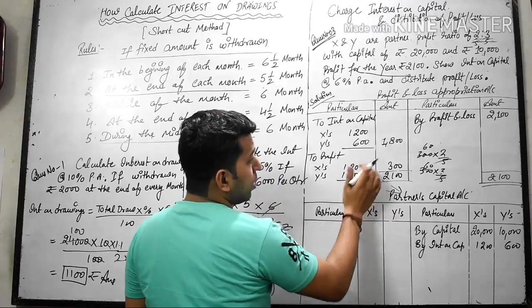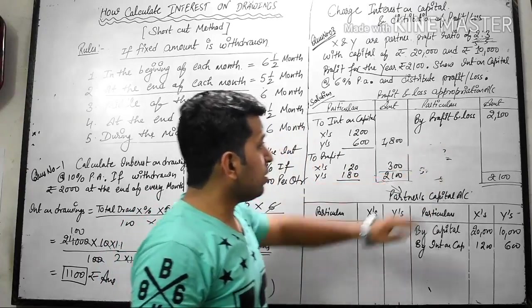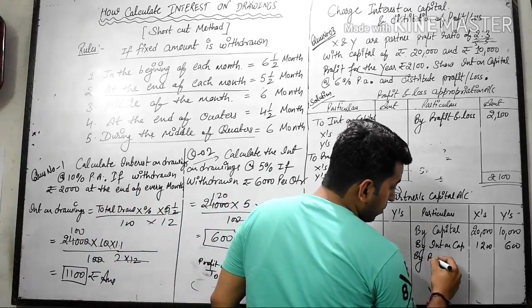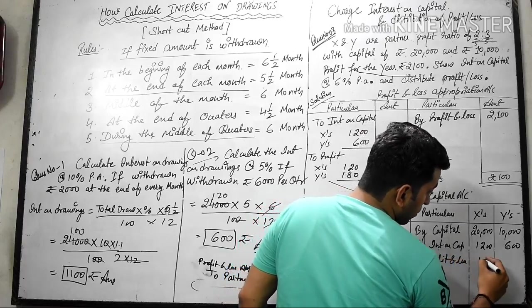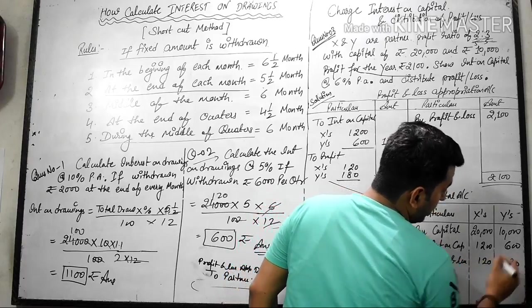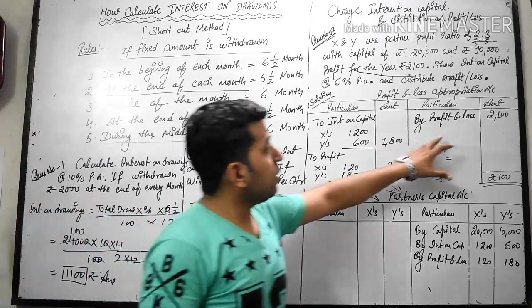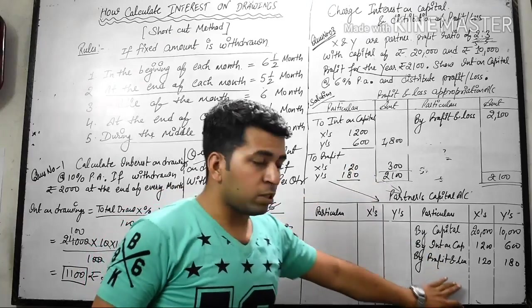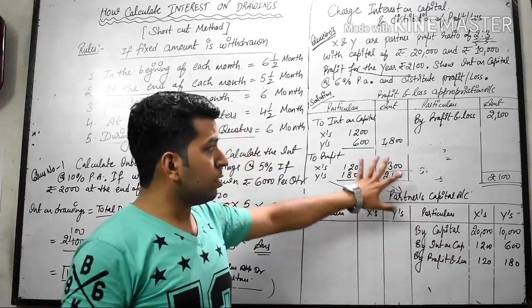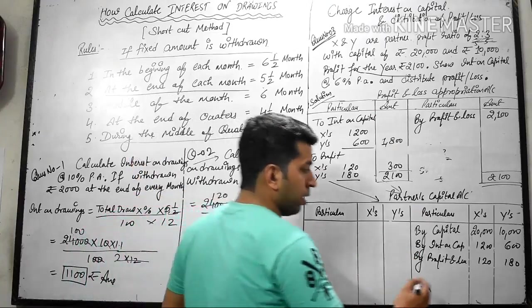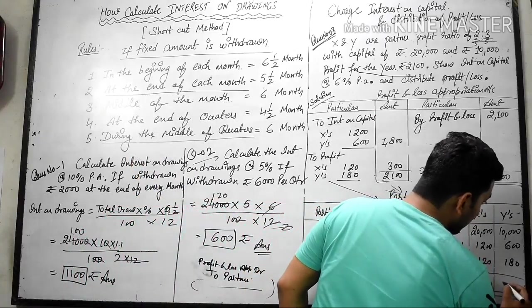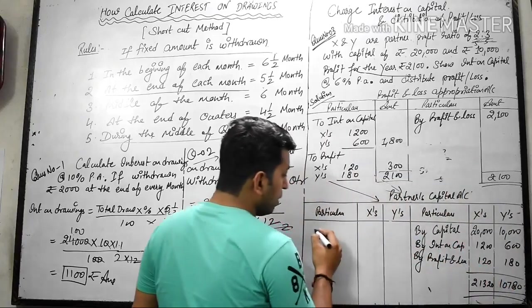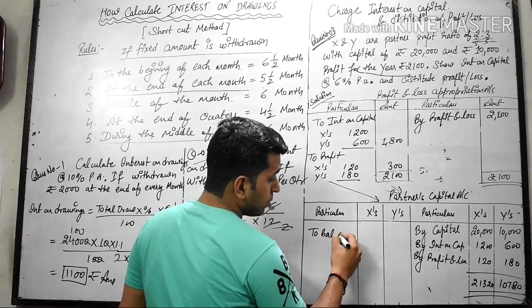2,100 total. Now the remaining profit, X and Y's ratio is 2:3. Everyone knows how to divide this. The sum is 5. Write this in ratio as 2 by 5, 3 by 5. 120 for X, 180 for Y. So this is profit distribution. Now this is cross posting. Guys here, by profit and loss 120 and 180. So this is the question. We charged interest on capital and we distributed profit. Now we have to stop and show the balance. So this is the balance, and this balance comes from adding these.